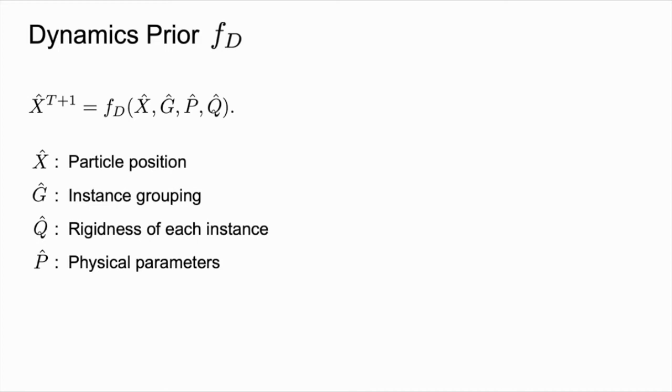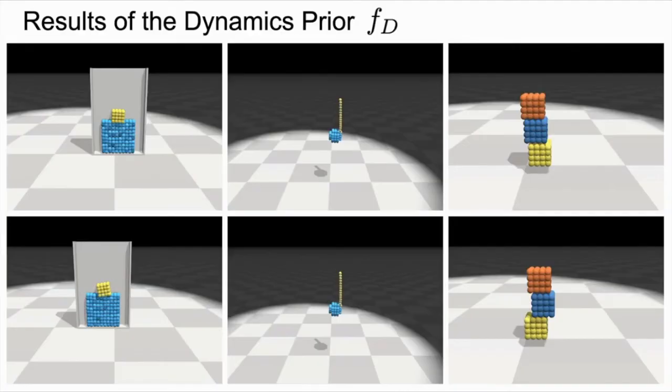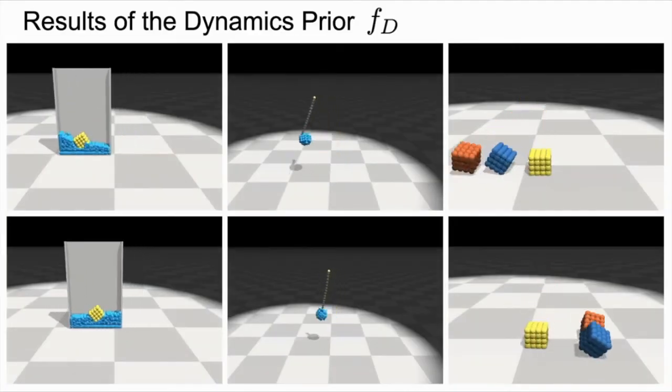Rigid objects will be constrained to only exert rigid motion. Finally, the environment also has a set of real-valued physical parameters P, like viscosity, gravity, stiffness, etc. Specifically, we use the Dynamic Particle Interaction Network (DPI-Net) to perform dynamical updates on the particle states using graph neural networks and spatial message passing. Here, we show some qualitative results of our dynamics prior in various environments.